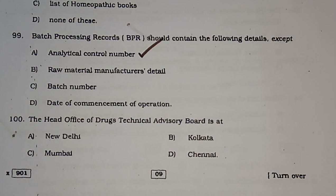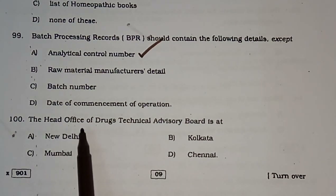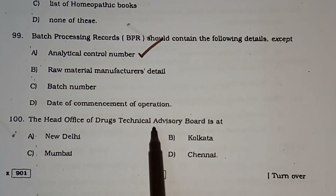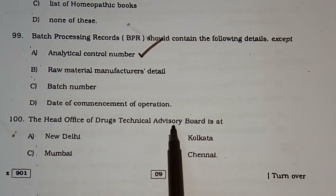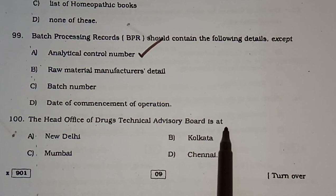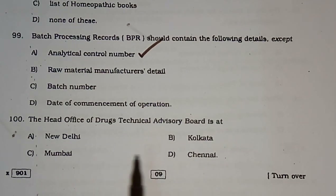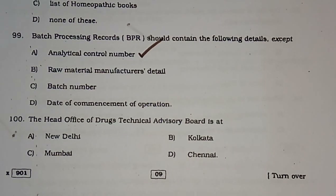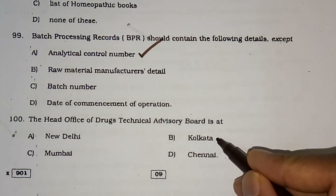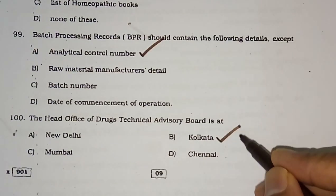Question number 100: The head office of the Drug Technical Advisory Board is at — New Delhi, Kolkata, Mumbai, or Chennai. The correct answer is Kolkata.